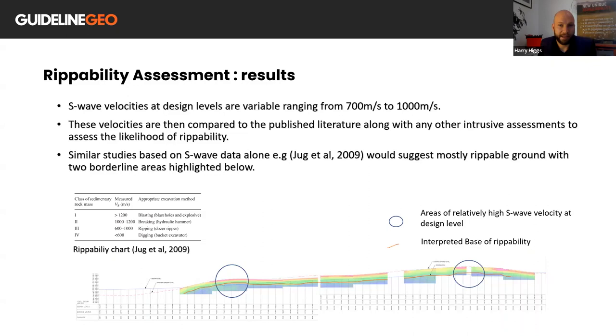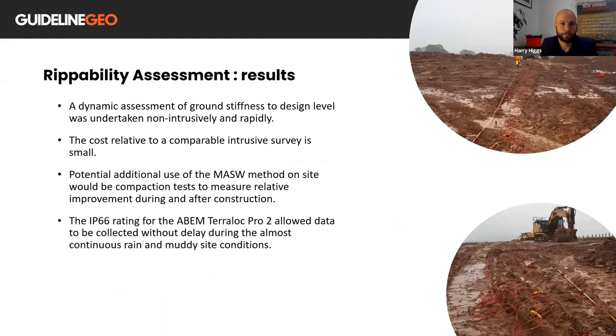The results showed that the S-wave velocity is variable ranging from around 700 to 1,000 meters per second at the design level. And these velocities are then compared to the published literature to assess the likelihood of ripability. So similar studies based on S-wave data alone, for example the one shown, would suggest mostly ripable ground at design level, with two borderline areas which have been highlighted with the blue circles.